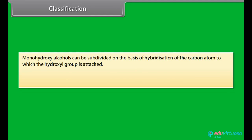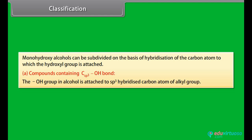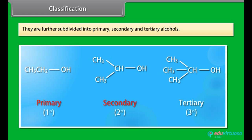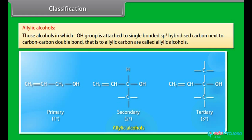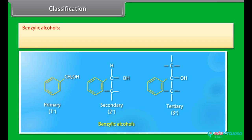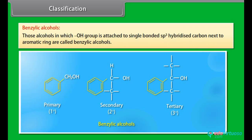Monohydroxy alcohols can be subdivided on the basis of hybridization of the carbon atom to which the hydroxyl group is attached. Compounds containing sp3 hybridized carbon atom bonded with hydroxyl group — the hydroxyl group in alcohol is attached to sp3 hybridized carbon atom of alkyl group — are further subdivided into primary, secondary and tertiary alcohols. Allylic alcohols are those in which the hydroxyl group is attached to a single-bonded sp3 hybridized carbon next to a carbon-carbon double bond, i.e., to an allylic carbon. Benzylic alcohols are those in which the hydroxyl group is attached to a single-bonded sp3 hybridized carbon next to an aromatic ring.